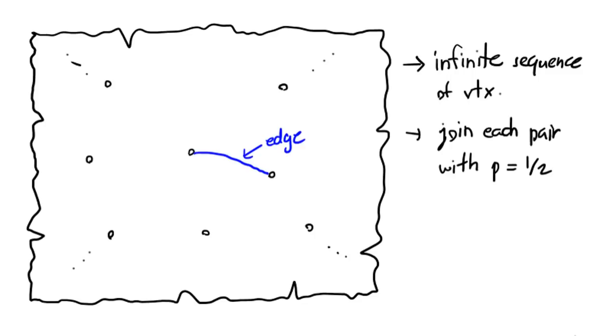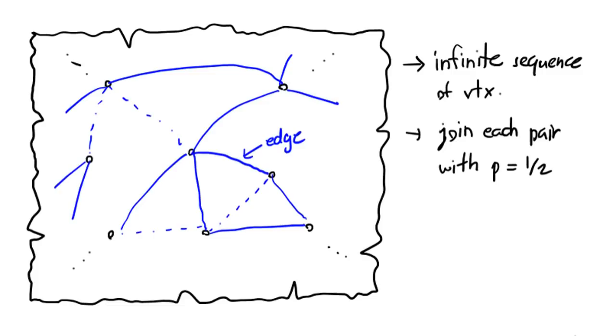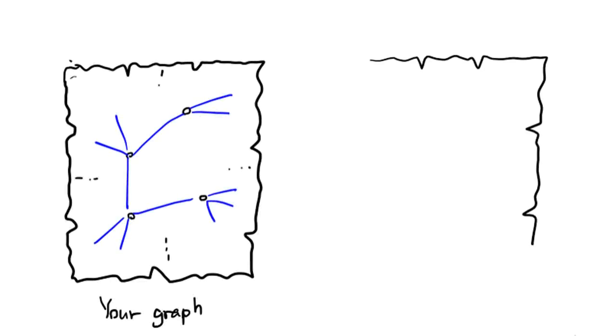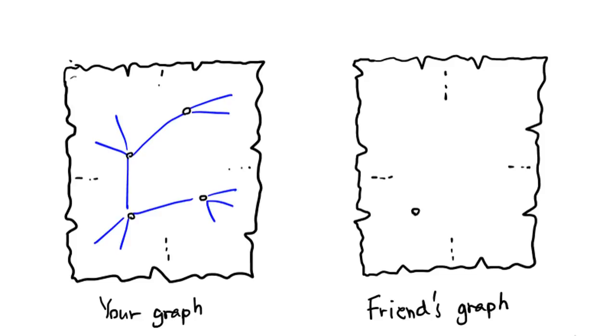Otherwise, you don't join them. After doing all of the infinitely many coin flips, one for each pair of vertices, you would end up with a figure called a graph. Now, suppose your friend does the same with their own paper, flipping coins and joining the edges randomly.